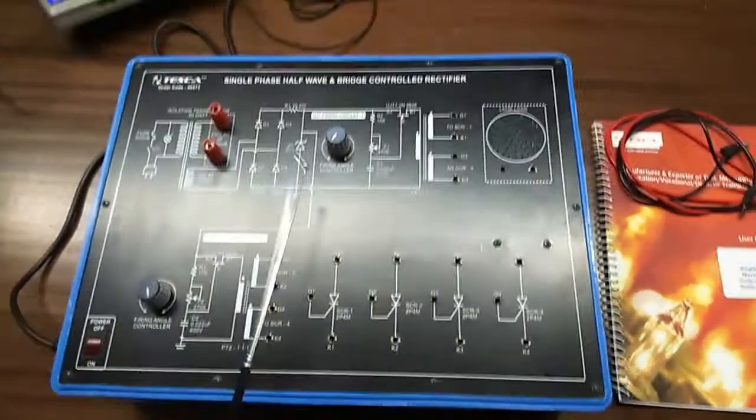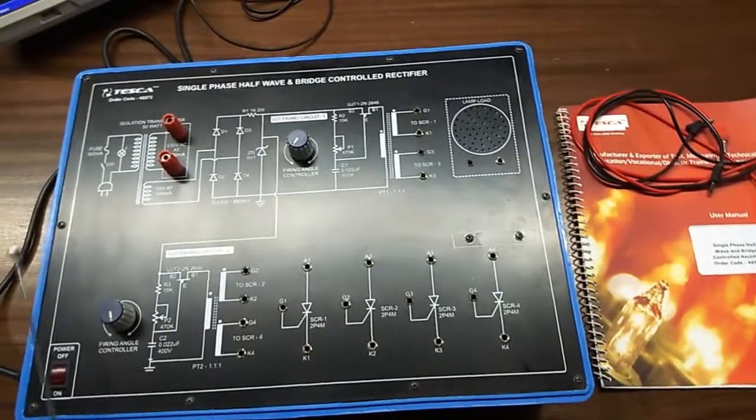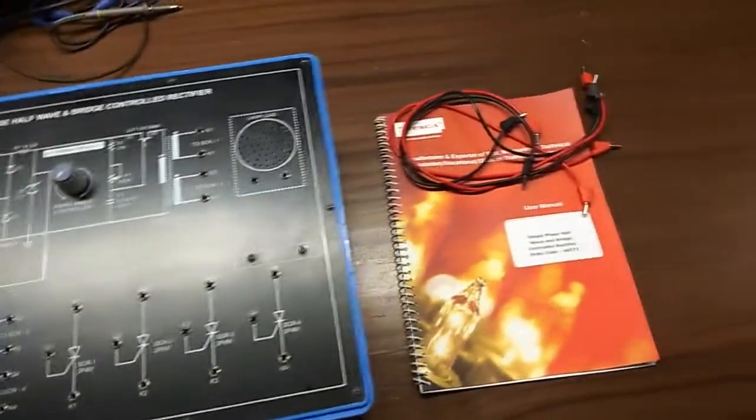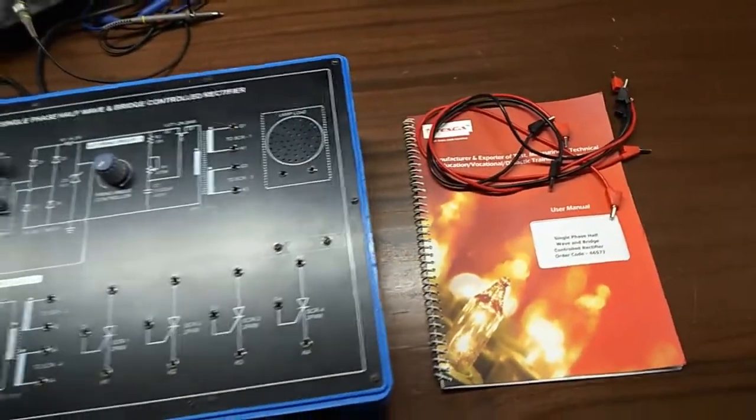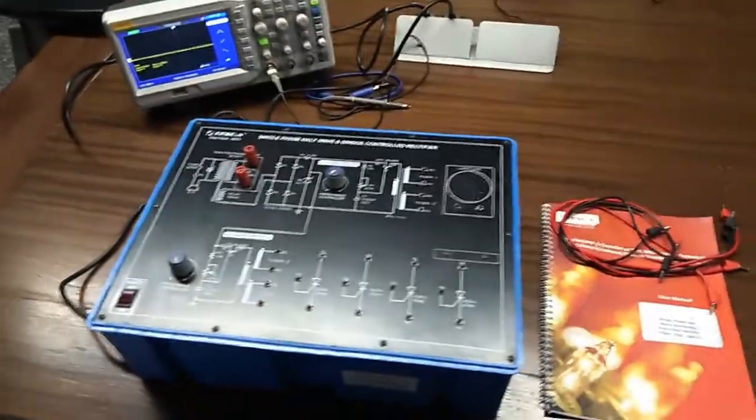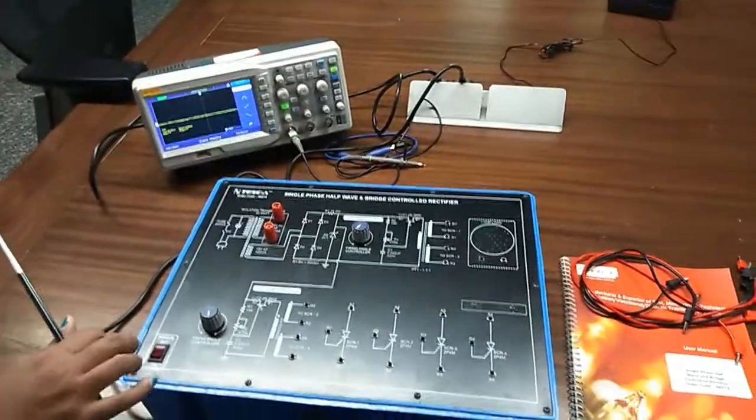There are 2 firing angle controllers, this and this. This is the main switch to turn on or off the kit. This is user manual and patch cords. These all are included in this kit, and to perform the experiments we will need a CRO or a DSO to observe the waveform.